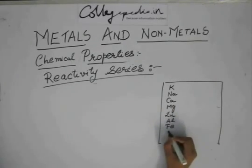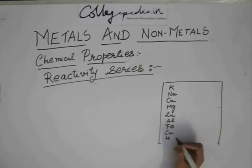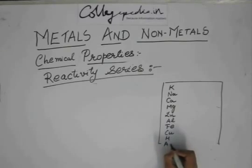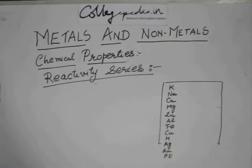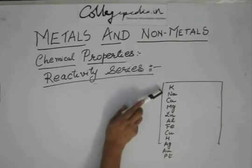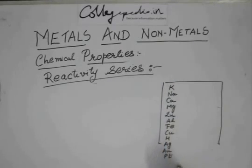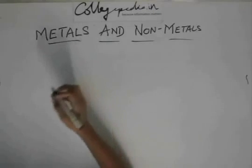After iron, we have copper, after copper we have hydrogen, and then we have your gold and silver. First silver, then gold, and then platinum. So it means that potassium can displace all these metals from their salt solution.